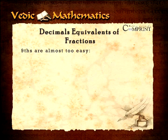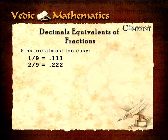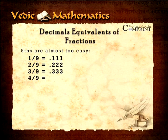Now, the ninths are almost too easy to learn. One-ninth equals 0.111, and so on. Two-ninths equals 0.222, and so on. Three-ninths similarly equals 0.333, and so on. Four-ninths equals 0.444, and so on.